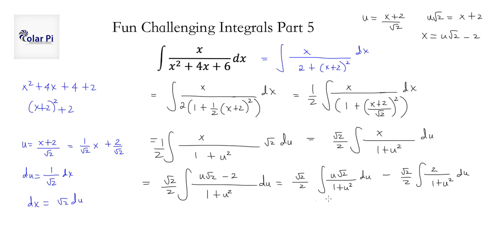First, I'm going to bring that root 2 in front and multiply there to get 2 over 2, which is 1. Beautiful. So, I simply have u over 1 plus u squared, du, and then I have minus, and this 2 and that 2 cancel. So, I have minus root 2, integral, 1 over 1 plus u squared du. Wonderful.